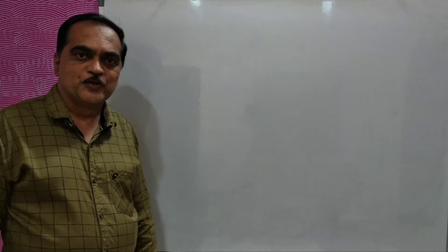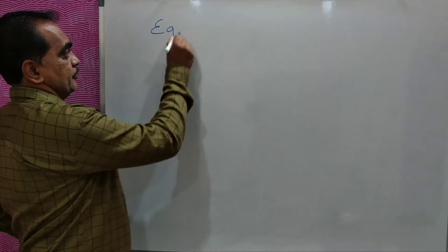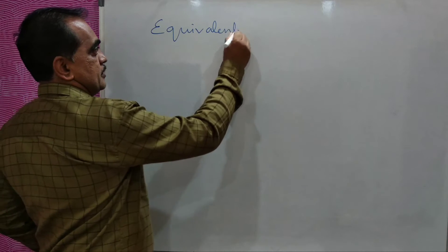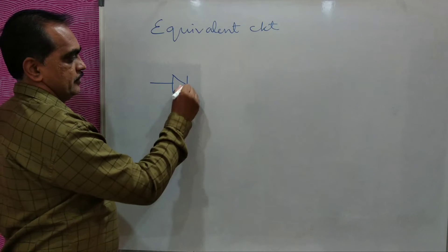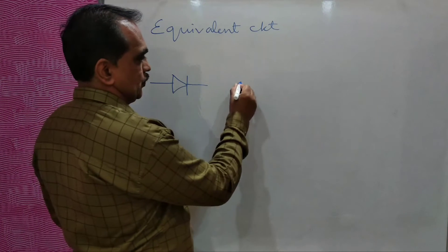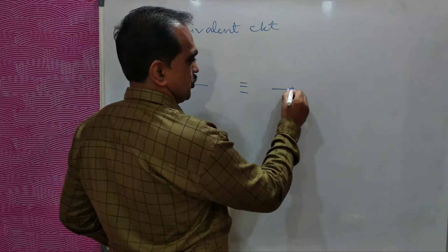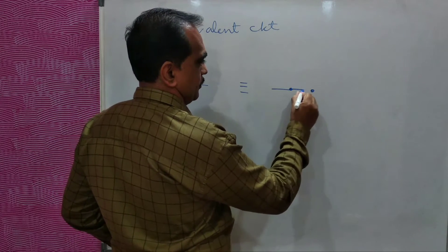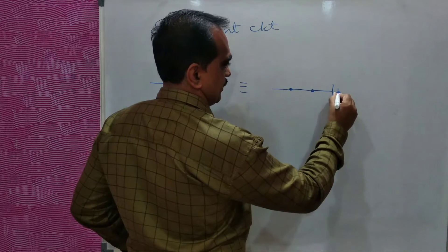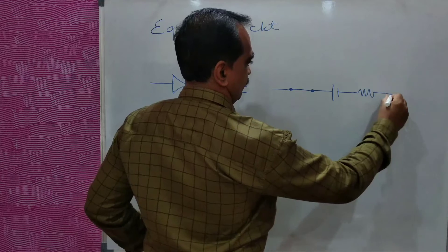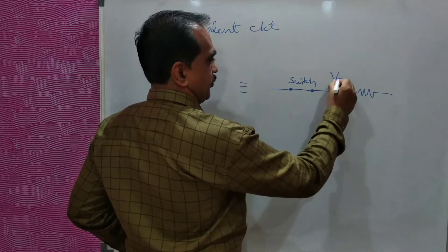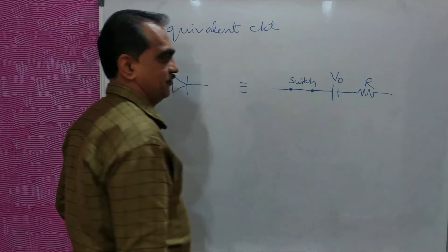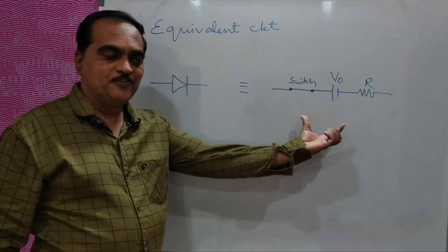Dear students, now we will see the equivalent circuit of a semiconductor diode. Say if you are having a diode like this, this diode will be equivalent to a switch, a barrier potential, and a resistance. This will be your equivalent circuit of a diode.